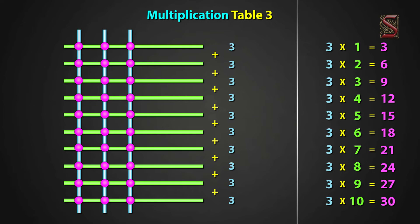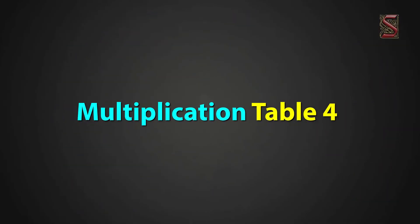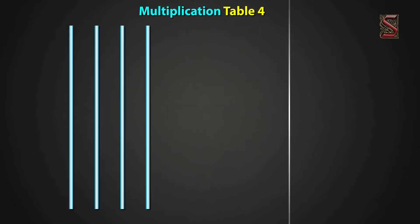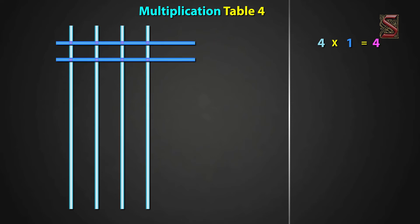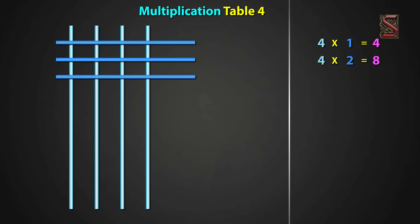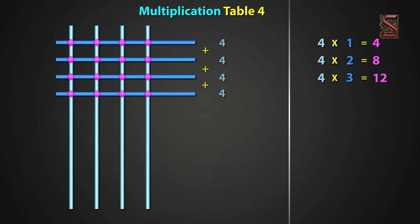Yes Oaks, shall I try multiplication table 4? Why not — yes, go ahead and try. Now, since it is multiplication table 4, we draw 4 standing lines. For 4 one times, draw 1 sleeping line. We have 4 meeting points. So, 4 one times equal to 4. For 2 times, draw 2 sleeping lines. We have 8 meeting points. So, 4 two times equal to 8. For 3 times, draw 3 sleeping lines. We have 12 meeting points. And, 4 three times equal to 12. For 4 times, draw 4 sleeping lines. We have 16 meeting points. And, 4 four times equal to 16.